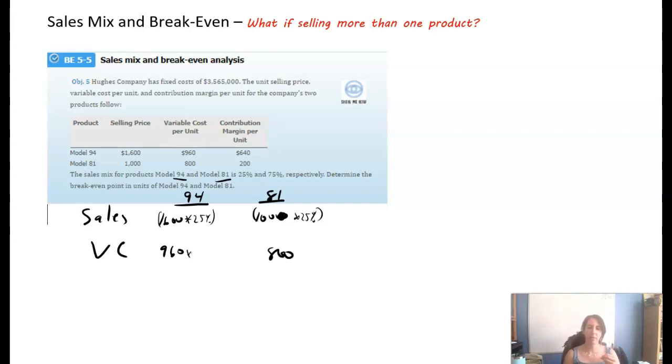So what we're going to do is we're going to look at what percentage of our sales mix is product 94, what percentage is 81. Well, 94 is 25% of our sales mix, meaning 25% of our sales come from this first product, and 75% of our sales come from this 81 product. So what we're going to do is we're going to multiply them times those percentages. So we're going to do 25% and times 25%. Like I said, we're kind of bringing them together.